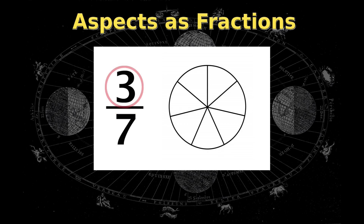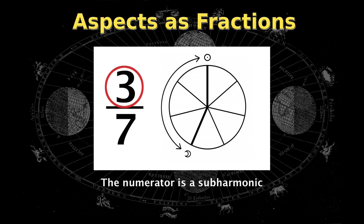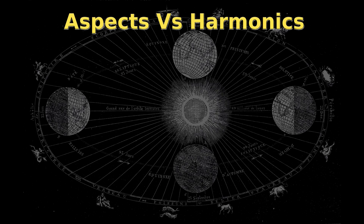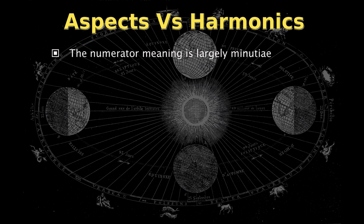The numerator is the number of segments away from the origin within the harmonic. The numerator is like a subharmonic — it carries the same meaning as a harmonic of the same value, but as a nuance. The numerator meaning is largely minutiae, although there are aspects in specific harmonics where the numerator becomes more important, which I will address when I come to those harmonics.